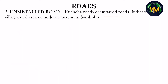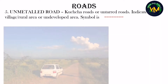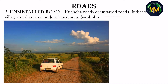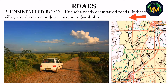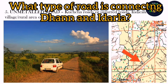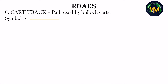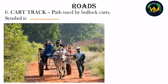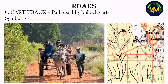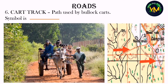Unmetalled roads are kachar roads indicating a village, rural or undeveloped area. This is the symbol for an unmetalled road, and this is how they look in our topographical map. For example, what type of road is connecting settlement Daan and Iderla? The answer is unmetalled road. Cart track: this is a path used by bullock carts — don't write 'car track', it is cart track. The symbol is just a single red line. From Dungrali you can see two roads going towards the south and east; those are cart tracks.